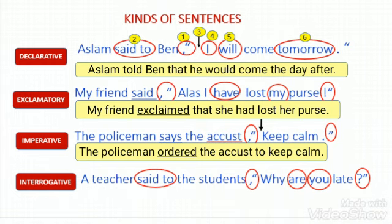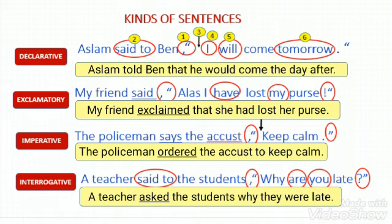Interrogative sentence — Direct speech: 'A teacher said to the student, why are you late?' This is an interrogative sentence with a WH-type question. We change 'said to' into 'asked.' Since it contains the question word 'why,' we do not add a separate conjunction. We change the pronoun 'you' into 'they' (referring to plural students). We change the tense: 'are' into 'were.' Result: 'A teacher asked the students why they were late.' We remove all commas and quotations.